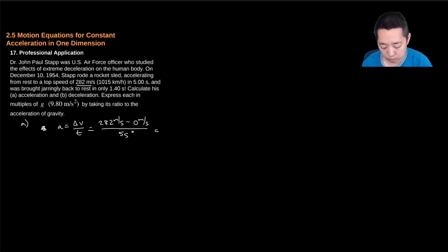So 282 divided by 5 is 56.4, and the units are meters per second squared.